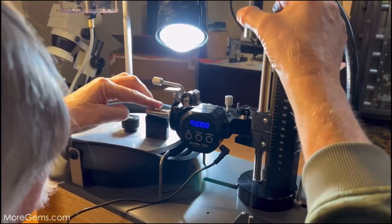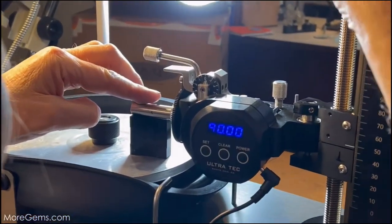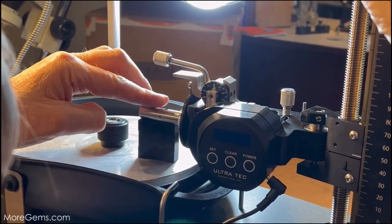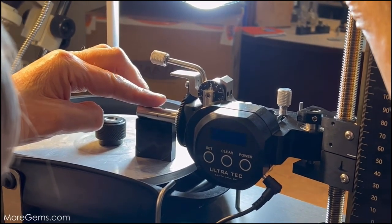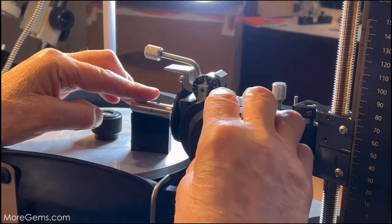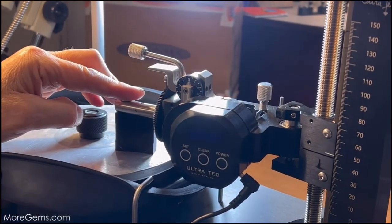You do that by looking at it until it goes dark. You can take it a little past dark and it'll go light on the other side. Once it's totally dark, we're going to set it, and now that's set at zero degrees.